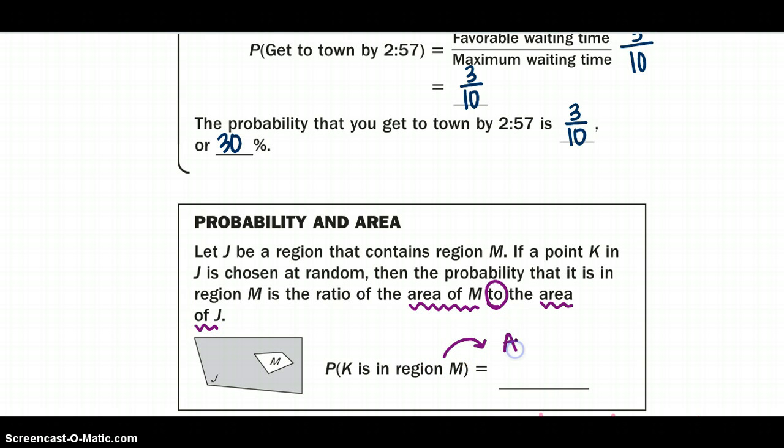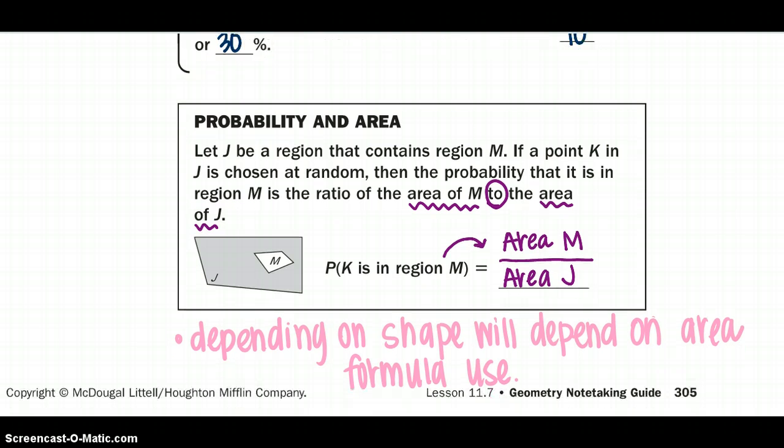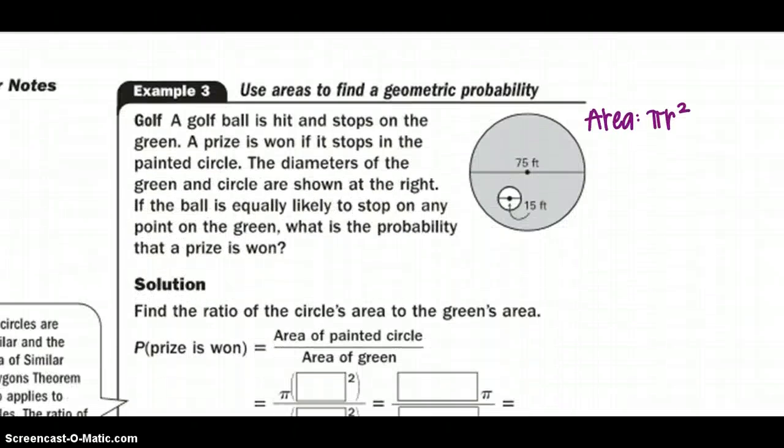So that's what goes, remember, on top. So we're going to find the area of M and we're going to divide that by the area of J, the entire area. So this is where our formulas from this section will come, or this chapter will come into play, because we have to know how to find the area of many different shapes.